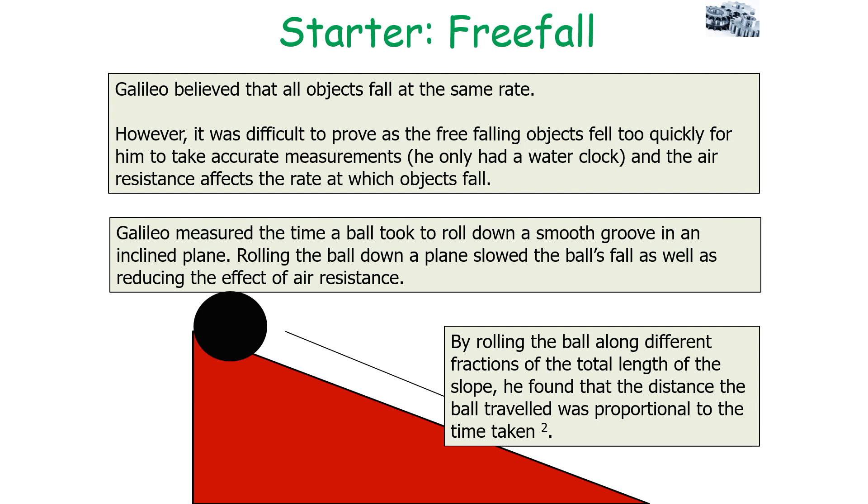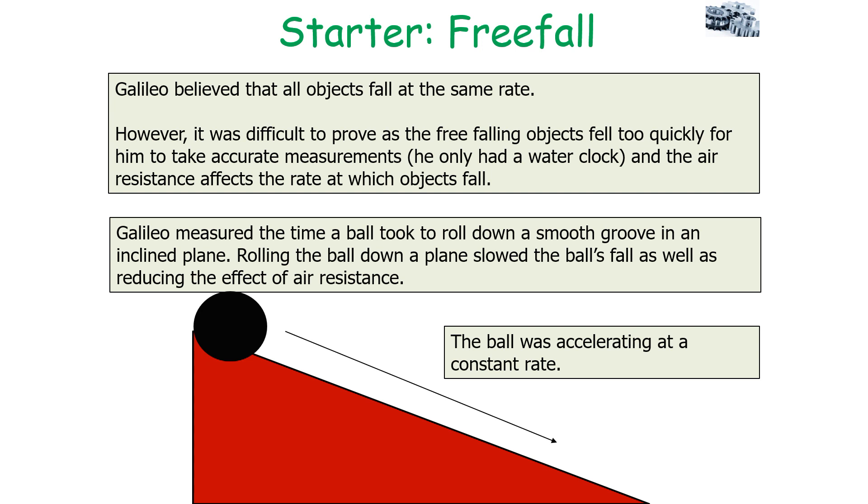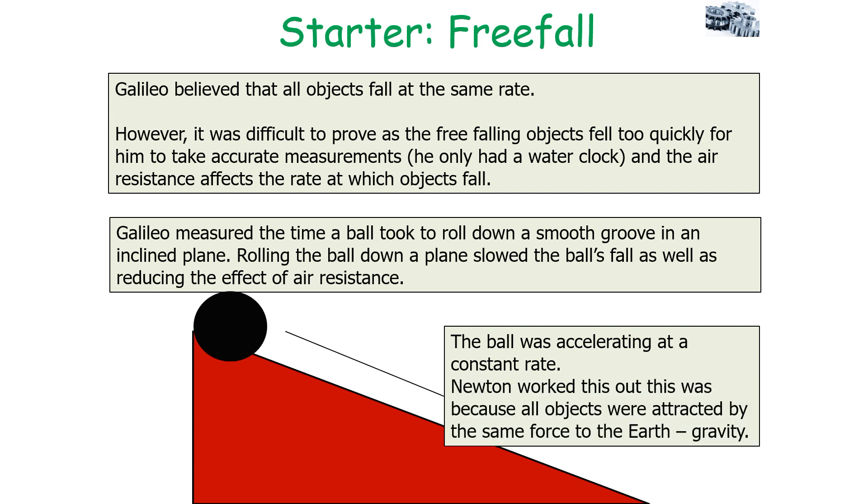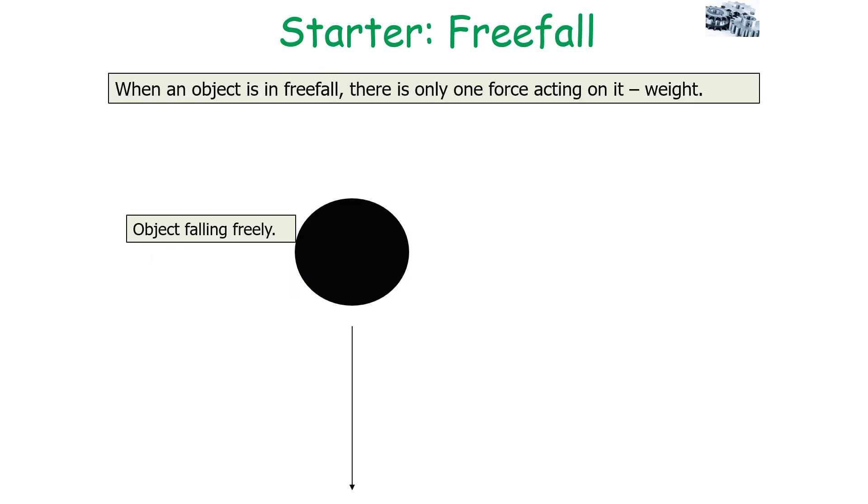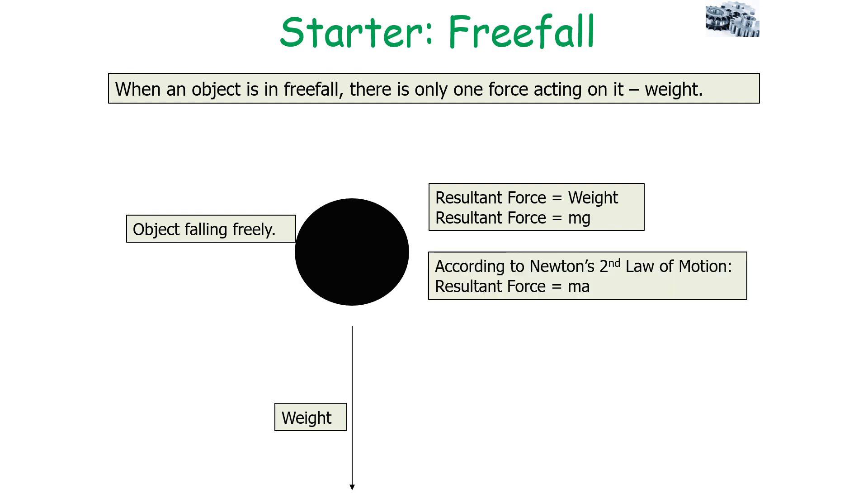Ultimately, Galileo realized that the ball was accelerating at a constant rate. Isaac Newton then used this to work out that this was because all objects were attracted by the same force to the Earth: gravity. As mentioned previously, when an object is in freefall, there's only one force acting on it—weight. So we can say the resultant force on the object is equal to the weight. We know the equation for weight is mg, and according to Newton's second law, the resultant force equals ma, so f = ma.